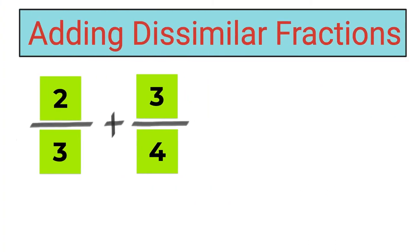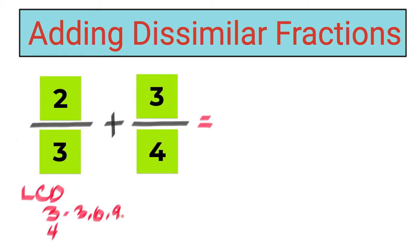Now let's try another example. We have two-thirds plus three-fourths. Again, we cannot add the numbers directly simply because they are dissimilar fractions — the denominators are not the same. So the first step is to find the LCD of three and four. Using skip counting for three: three, six, nine, twelve, fifteen. For four: four, eight, twelve. There is a common number, and that is twelve.